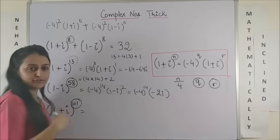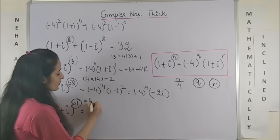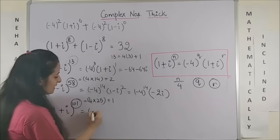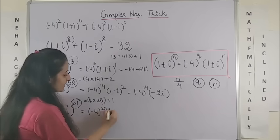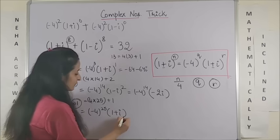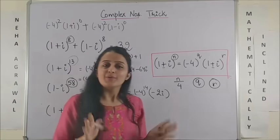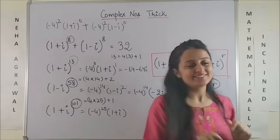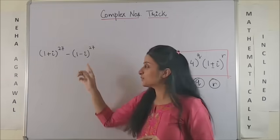Similarly, 101, if you try and divide, this will be 4 into 25 and the remainder would be 1, so minus 4 raised to power 25 into 1 plus iota. Bingo! Wasn't this so quick?